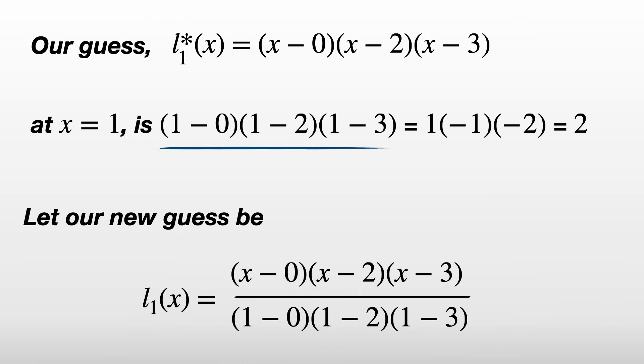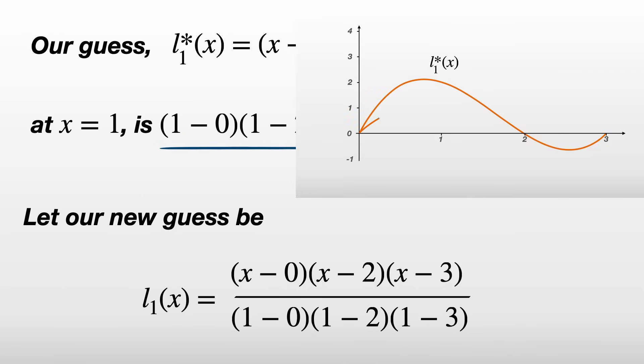We have the polynomial on the numerator which makes L_1 equal to 0 at all the other nodes 0, 2, and 3, and we divide by that same polynomial evaluated at the node we want it to be equal to 1.